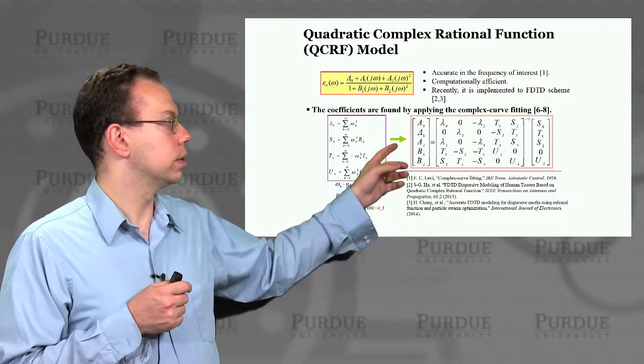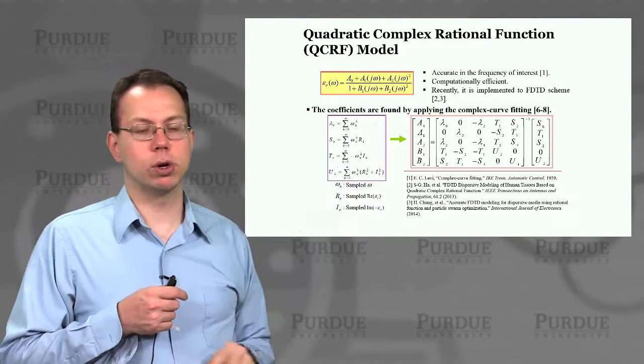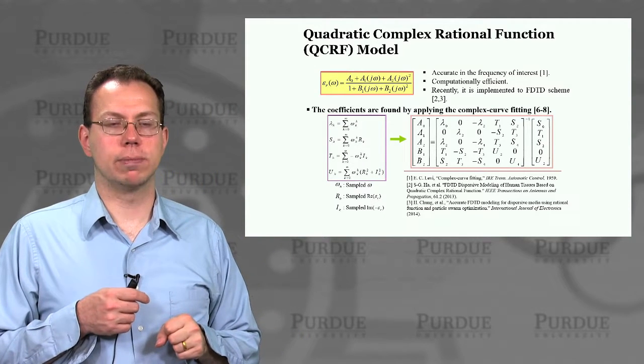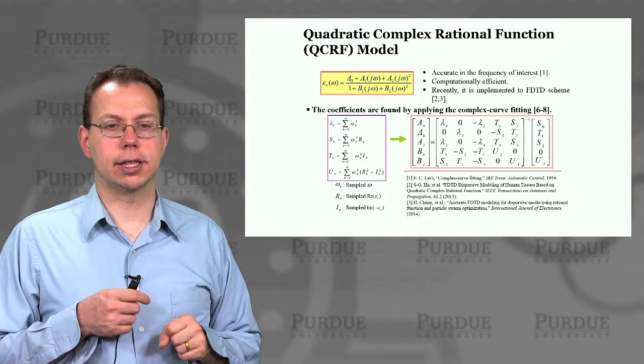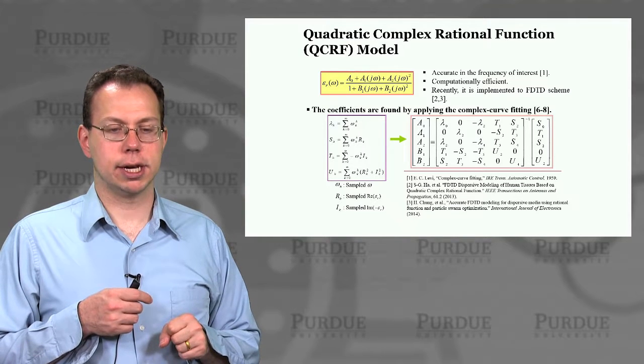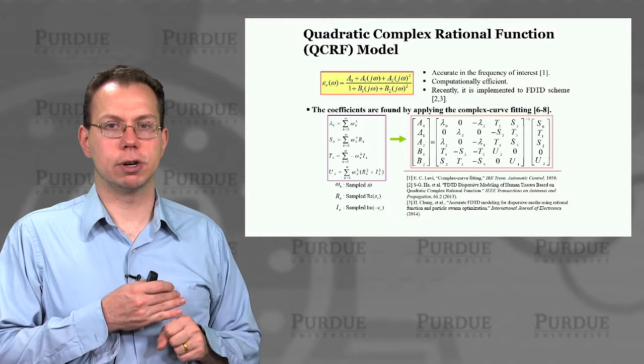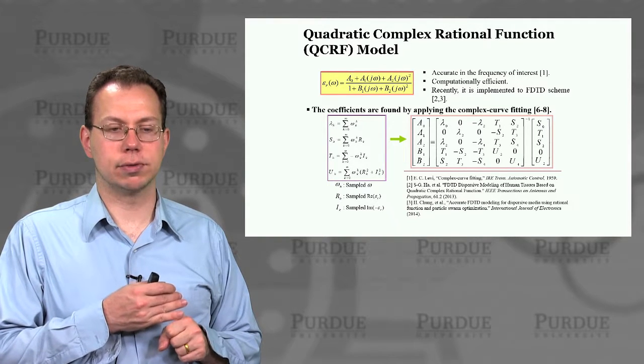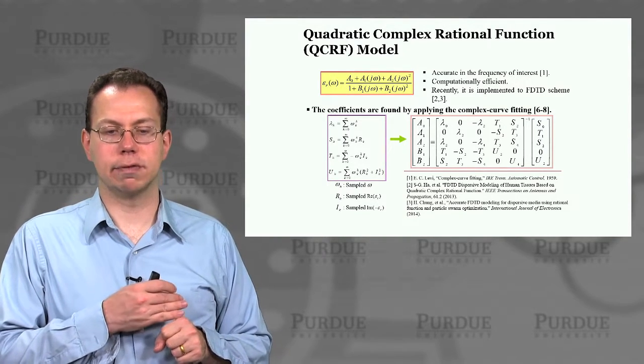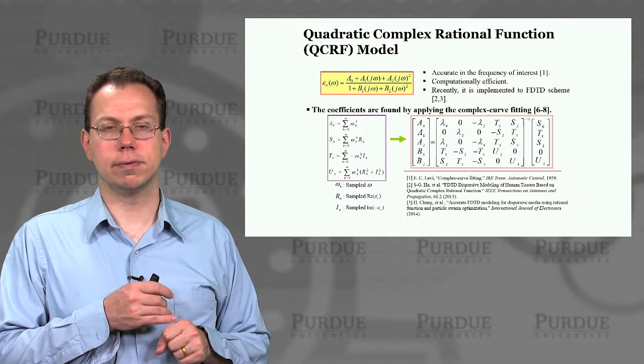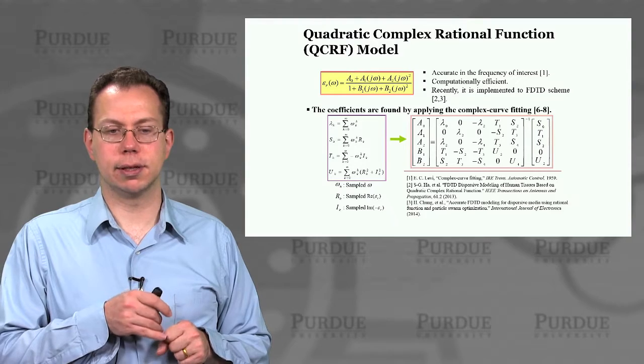This is actually oftentimes a more accurate model for semiconductors than some of the other more popular approaches like the Drude-Lorenz model. Basically because Drude-Lorenz assumes a very small number of resonances, whereas QCRF allows a broad range of absorber resonances that are usually what you see in semiconductors because of the band structures.